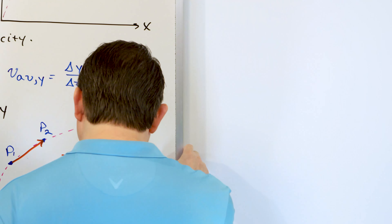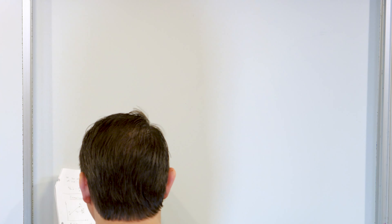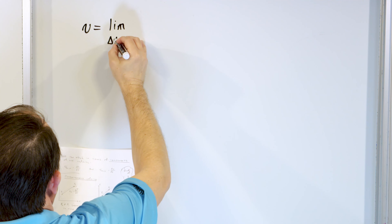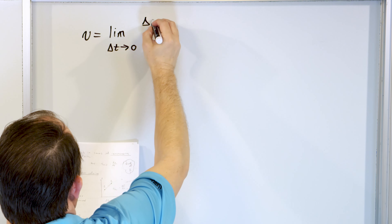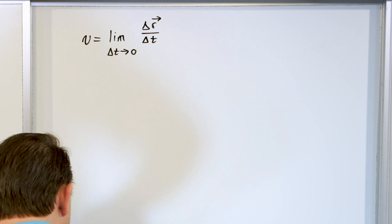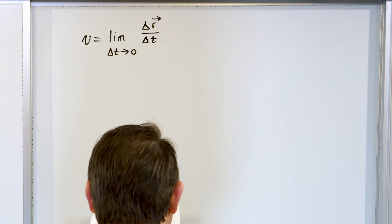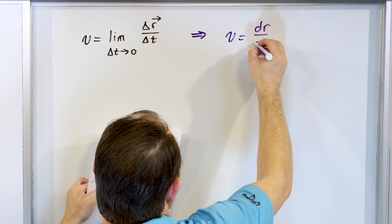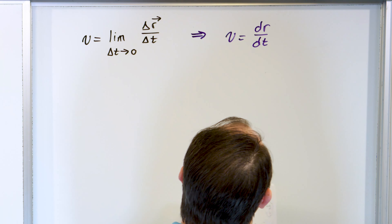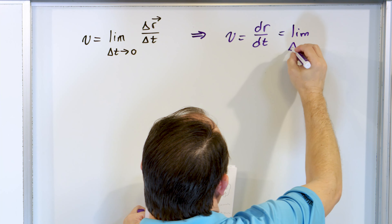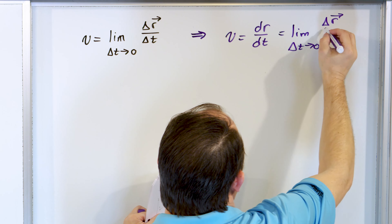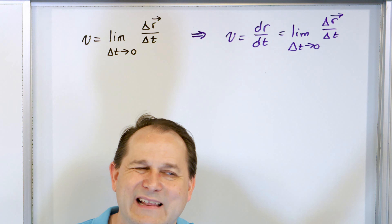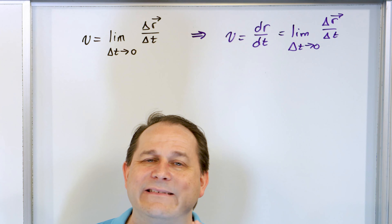The instantaneous velocity is equal to the limit as delta t goes to zero of delta r divided by delta t. For those taking calculus, this basically becomes what we call the derivative — the velocity equals dr/dt. These two things are the same thing. When you see dr/dt in calculus, it means you take the limit as delta t approaches zero of the change in r divided by the change in time. This is what the instantaneous velocity is — it's the rate of change of position divided by how long it takes.